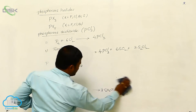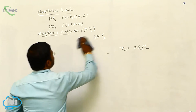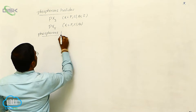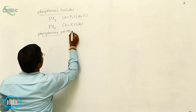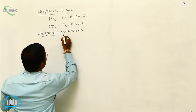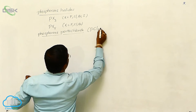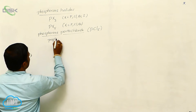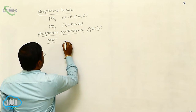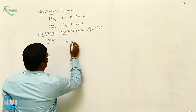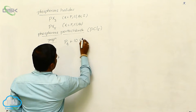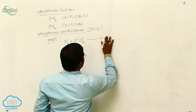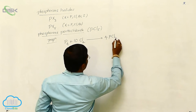One more important phosphorus halide is phosphorus pentahalide, specifically phosphorus pentachloride, represented as PCl5. For its preparation by direct method, white phosphorus reacts with dry chlorine gas at high temperatures and produces 4 PCl5.